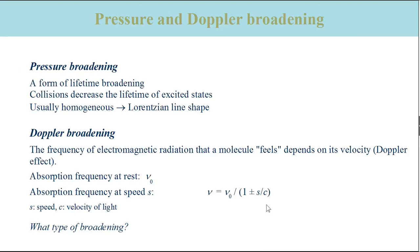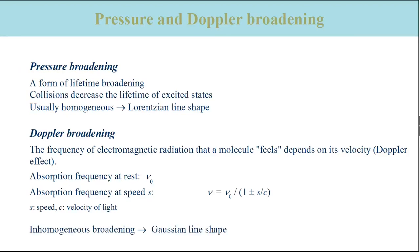Have a thought now whether Doppler broadening is homogeneous or inhomogeneous. Please stop the video to have time to think. Doppler broadening is inhomogeneous since not all particles behave in the same way. They have different velocities. This results in a Gaussian line shape.